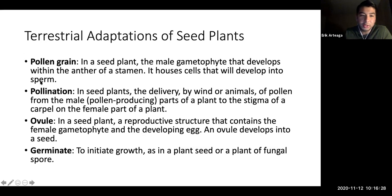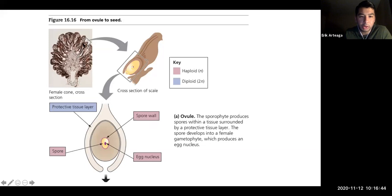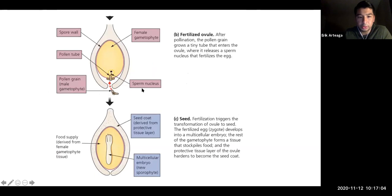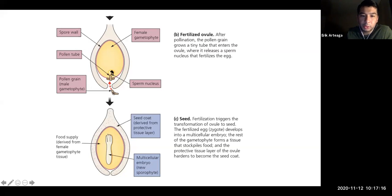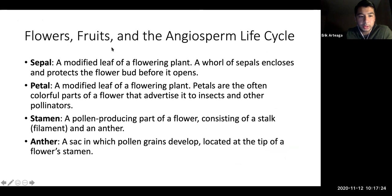For terrestrial adaptation of seed plants, know pollen grain, pollination, and ovule germination. The ovule is found inside the cone and needs to be fertilized by pollen. The pollen grain — the male gametophyte — delivers the sperm nucleus to the female haploid ovule, fertilization occurs, and you have a seed.